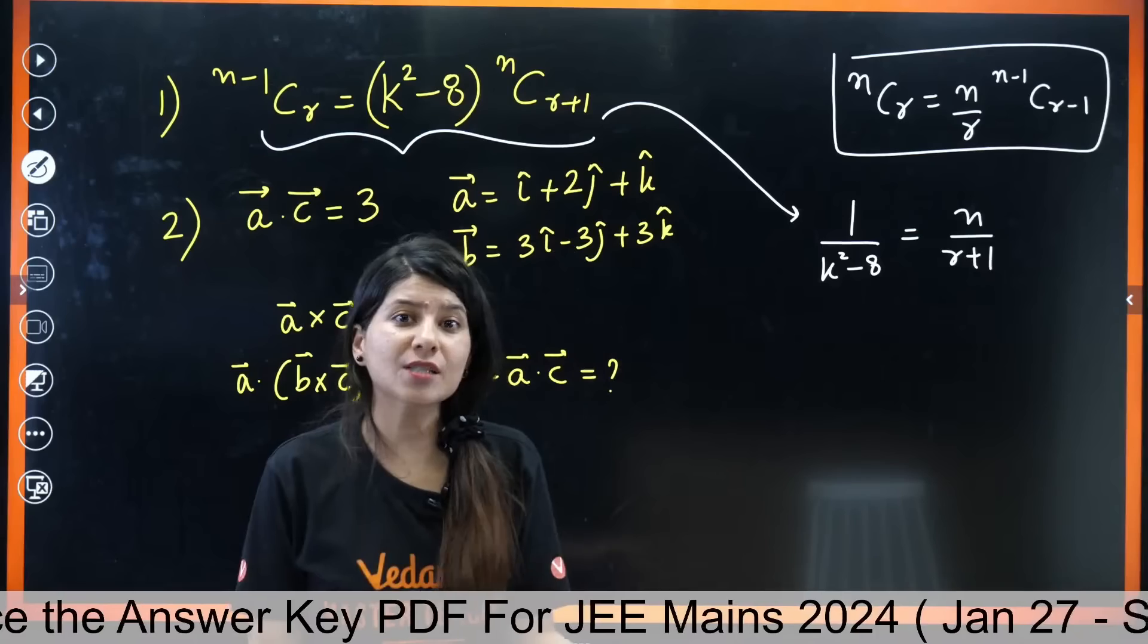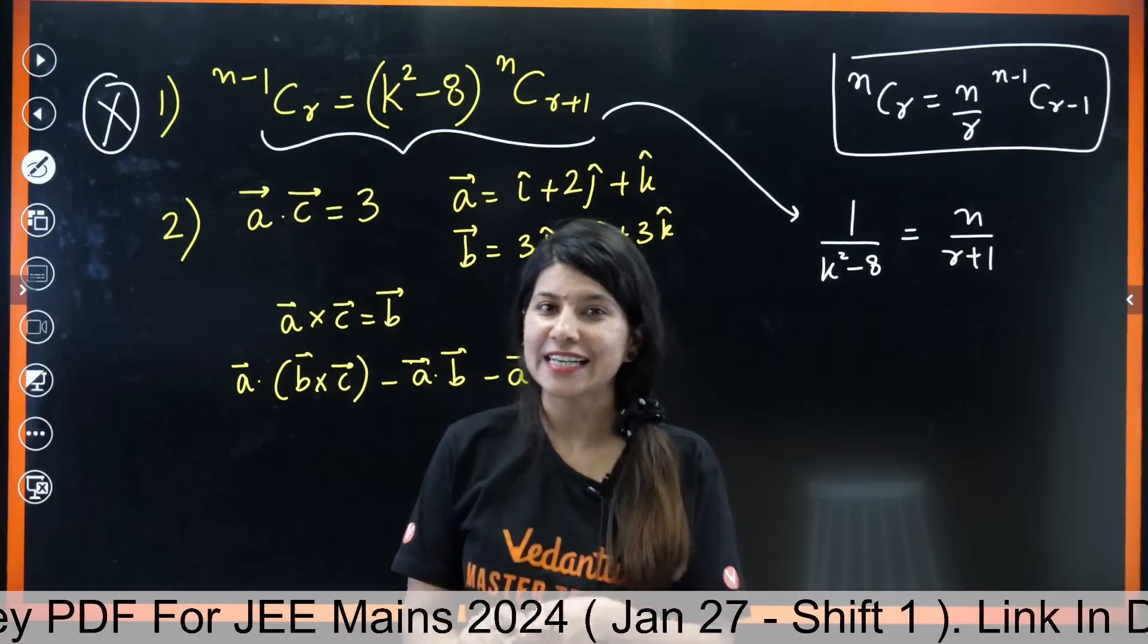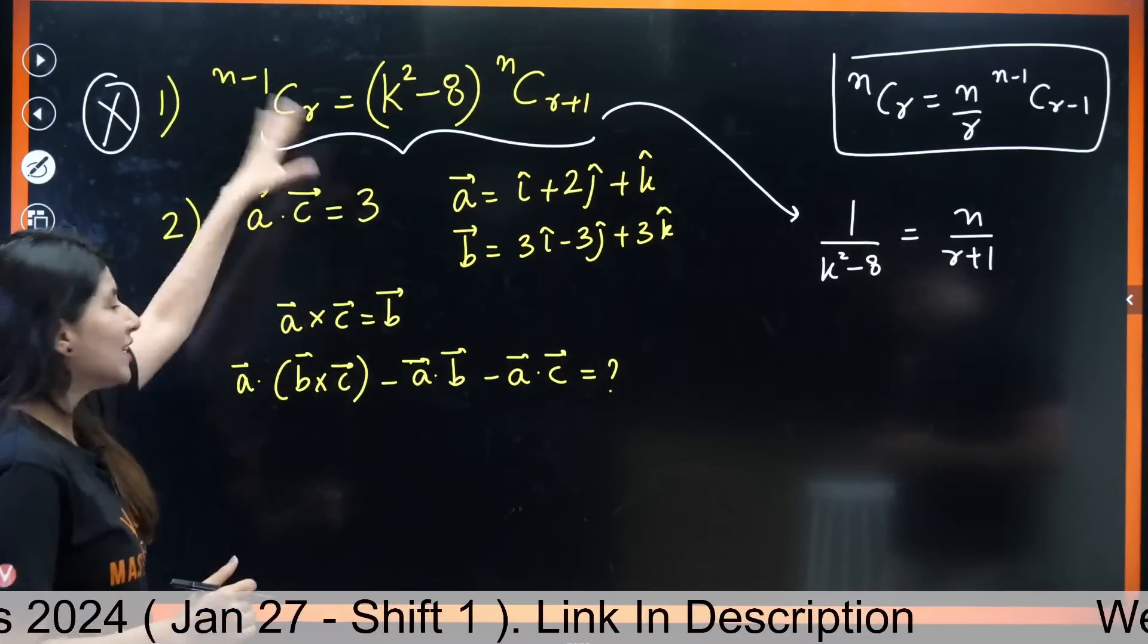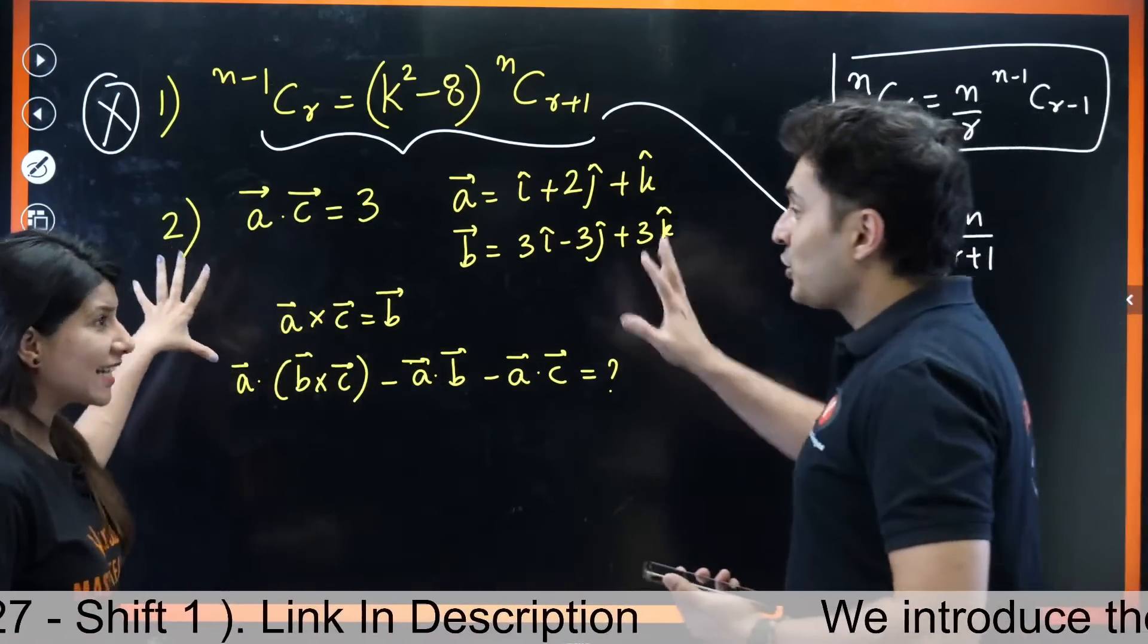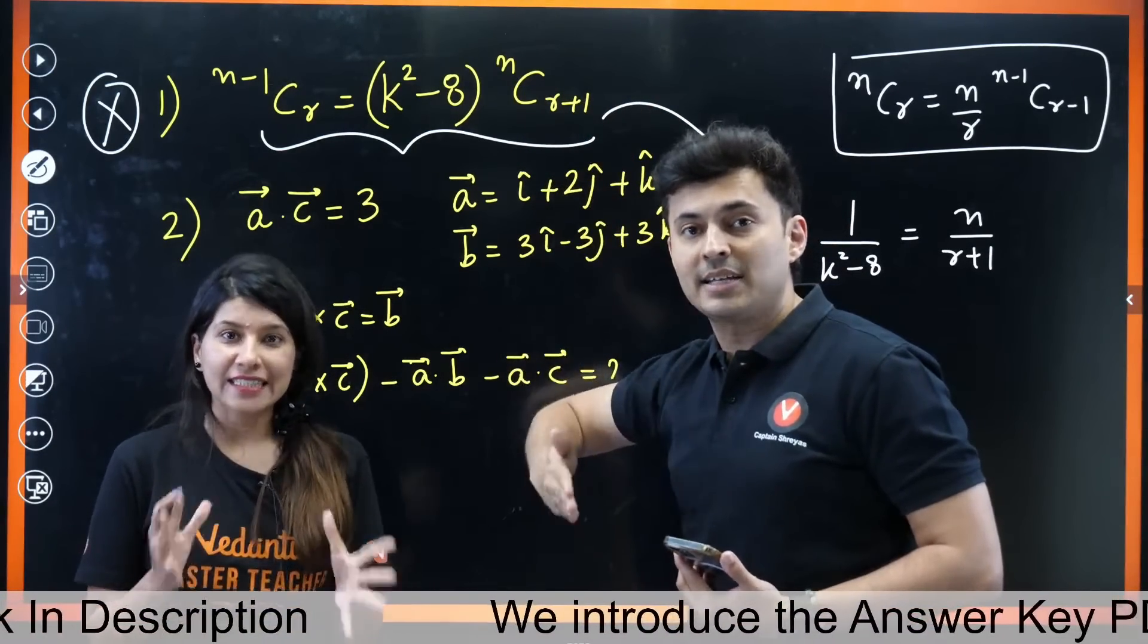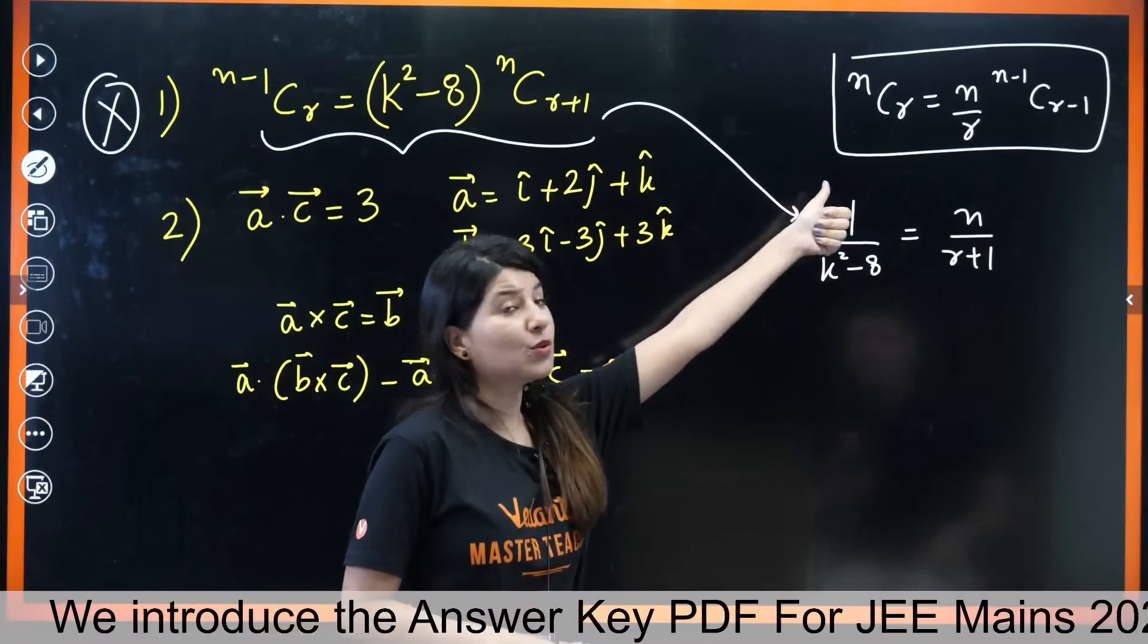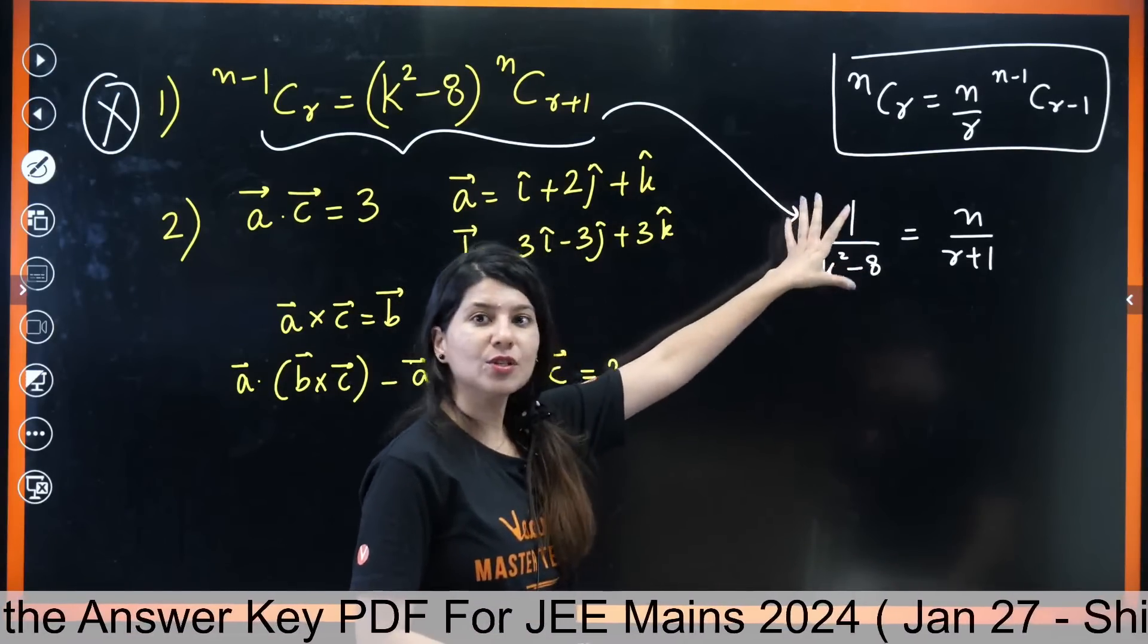If you just simply expand without using this property, then also you can get one upon k squared minus eight equals n upon r plus one. You can get by using this property as well and without using this property as well. So basically it's bad news for us that we cannot claim this question. We cannot say give us this as a bonus question. This question is gone, we are not claiming this.